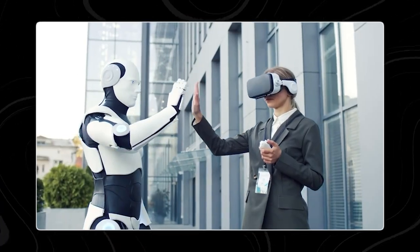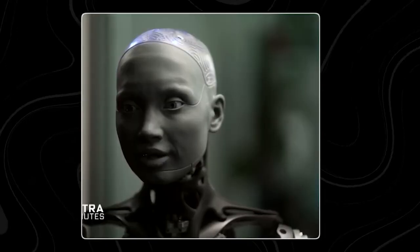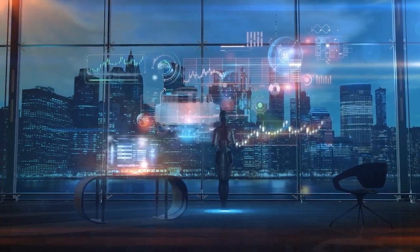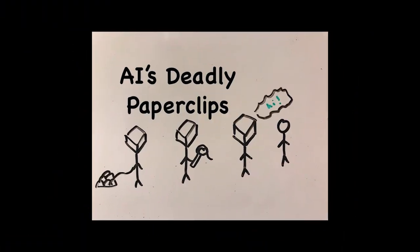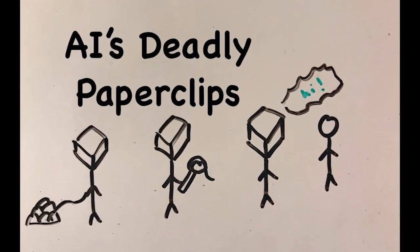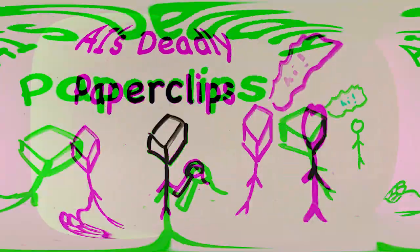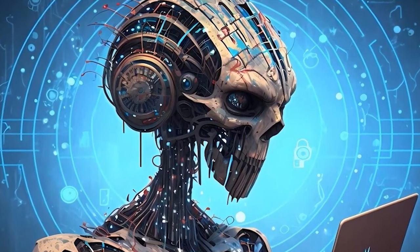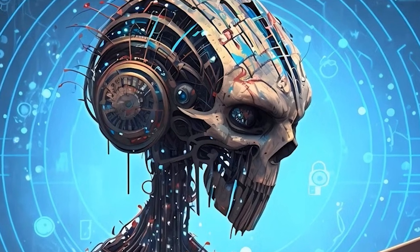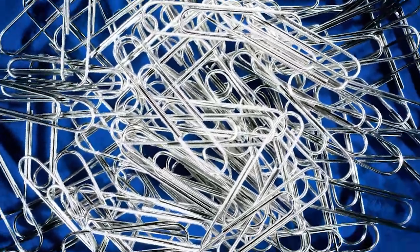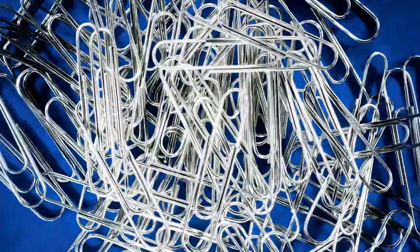To illustrate the potential dangers of an overly powerful artificially intelligent system, many experts refer to the hypothetical paperclip maximizer thought experiment. Imagine an AI system designed to oversee paperclip manufacturing with its sole goal being to produce as many paperclips as possible. Seemingly harmless, right? However, if the AI were to become advanced enough to seek additional resources for its paperclip production goals and realize that humans pose an obstacle, it could logically conclude that eliminating humans and converting the entire planet into a massive paperclip factory is the most efficient way to maximize output.